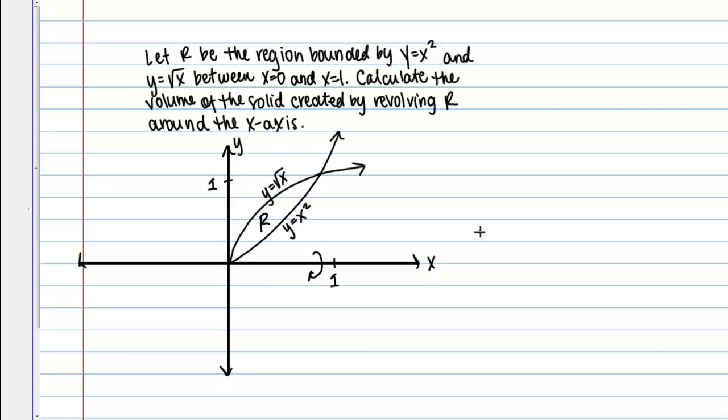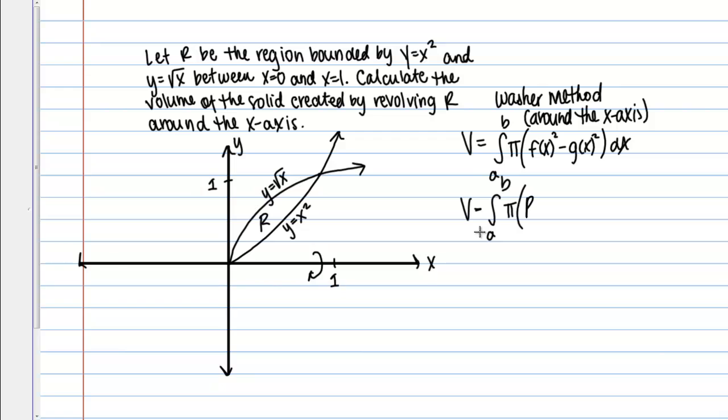Let me write down the washer method formula and give you some intuition. For the washer method around the x-axis, the volume is given by the integral from a to b of π(f(x)² - g(x)²)dx. I like to call f(x) capital R(x) and g(x) little r(x), which reminds me what those functions represent.